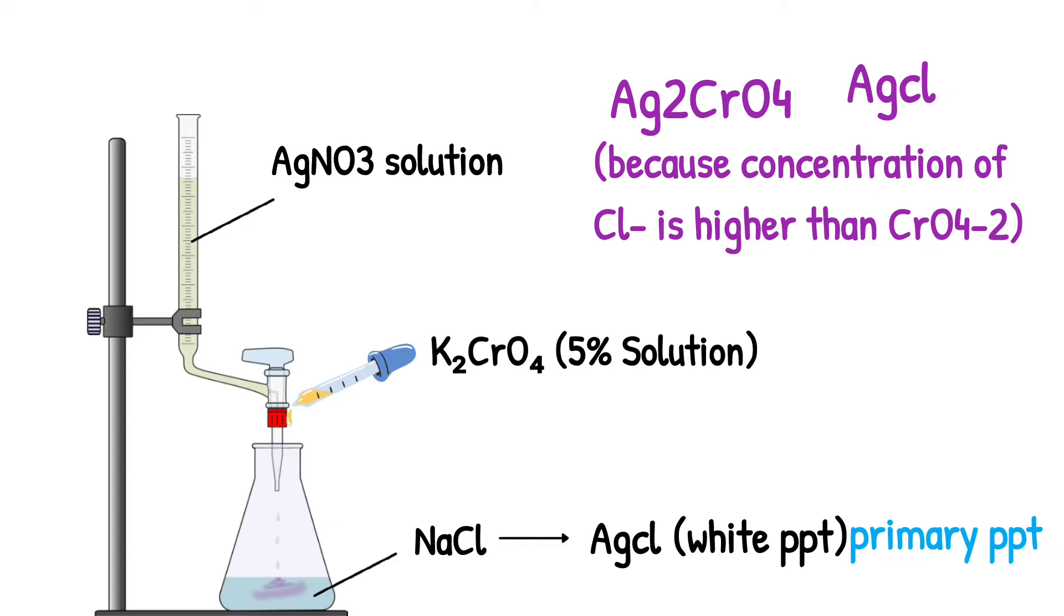After that, addition of extra drop of AgNO3 will lead to reaction with CrO4^2- ion from indicator and it will form reddish brown precipitate of Ag2CrO4, which is also known as secondary precipitate. At the endpoint, reading is taken and Cl- ion concentration is detected.